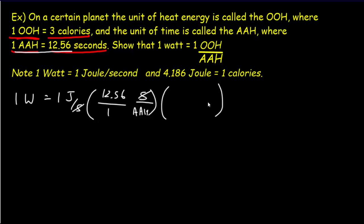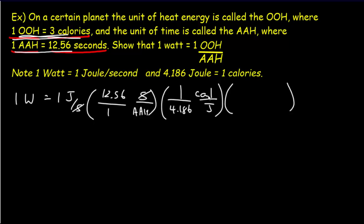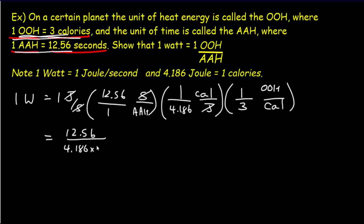Now let's get rid of the joules. First we convert to calories, since our conversion factor to alien units goes through calories: 4.186 joules equals exactly one calorie. Now we've got calories per ah. Next, we put calories in the denominator and oo's in the numerator, knowing one oo is three calories. We get 12.56 on top and 4.186 times 3 on the bottom — units of oo's per ah — and the division confirms that one oo per ah is exactly equivalent to one watt.